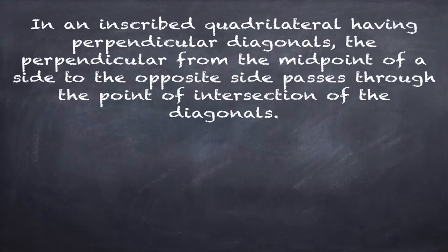The Brahmagupta Theorem states that in an inscribed quadrilateral having perpendicular diagonals, the perpendicular from the midpoint of a side to the opposite side passes through the point of intersection of the diagonals.